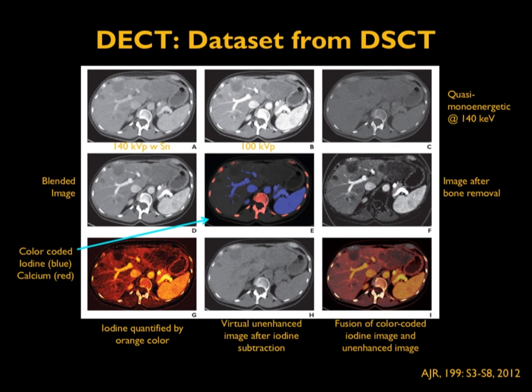Here is an example of the data sets obtainable with dual-energy CT. By acquiring raw data at two different energies, users can reconstruct a variety of image types. The top panel shows two different energies — 140 kV with a tin filter and a 100 kV image — combined to produce quasi-monoenergetic images at 140 keV, or a blended image, a bone-removal image, and color-coded images. The middle image on the bottom panel is a virtually unenhanced image after iodine subtraction. All of these are possible once dual-energy spectrum images are acquired.